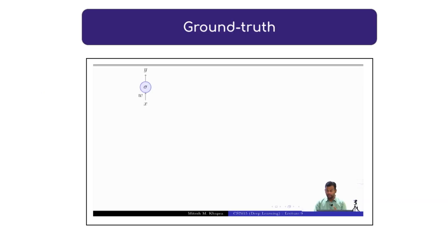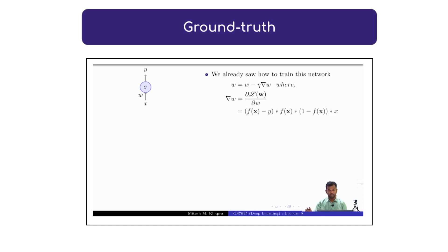So we already saw how to train such a very shallow neural network. What was the learning algorithm? Gradient descent. And this was the update rule. In particular, I want you to notice that the gradient actually depends on the input.